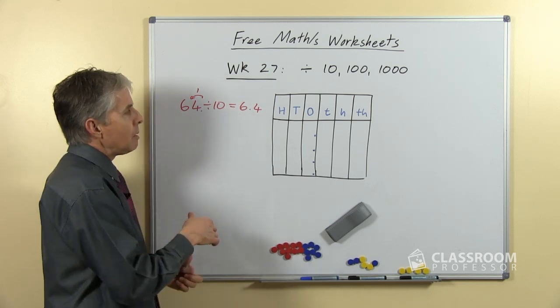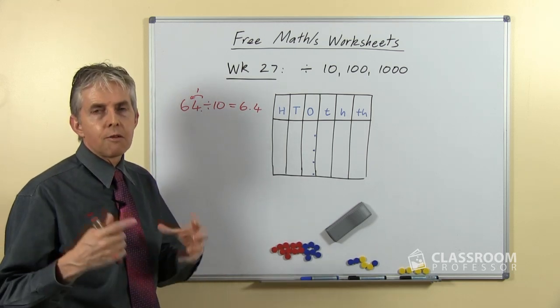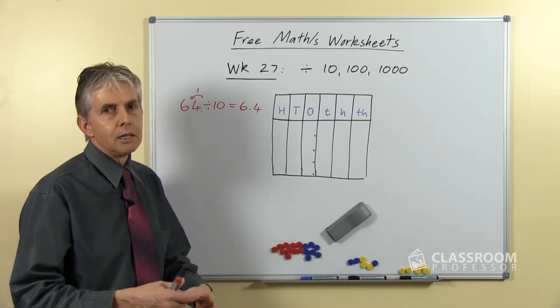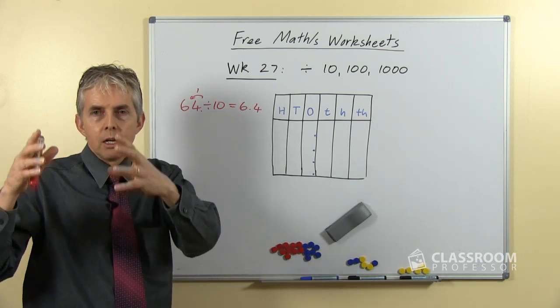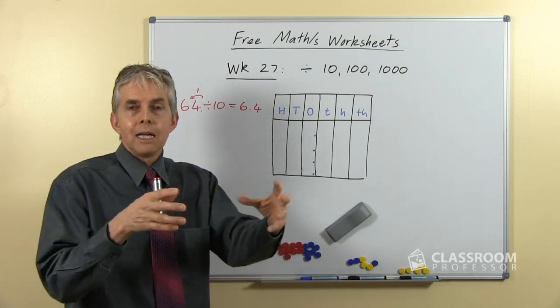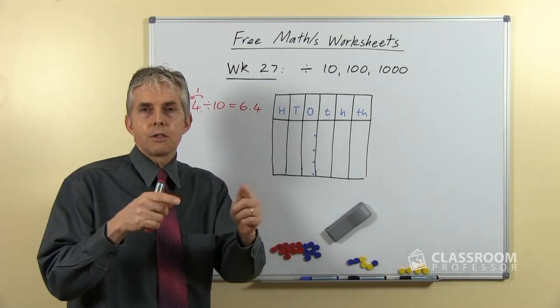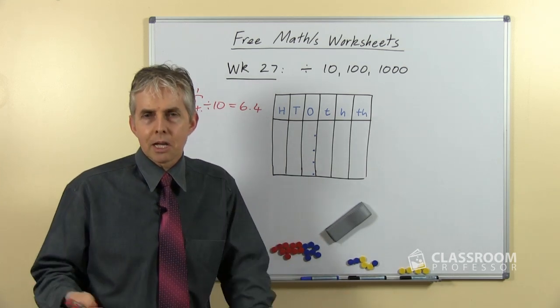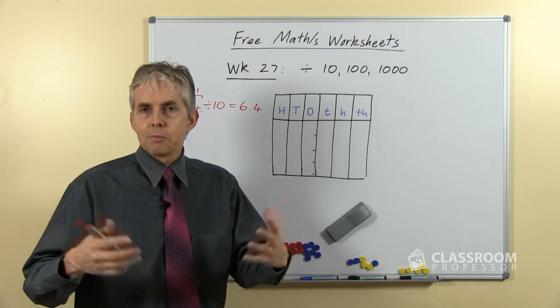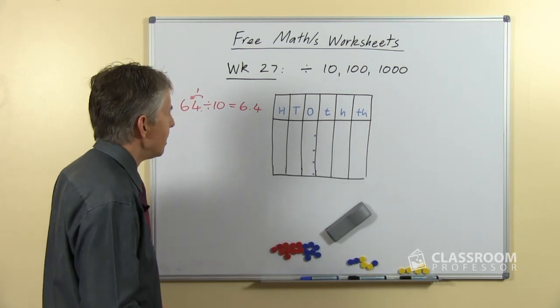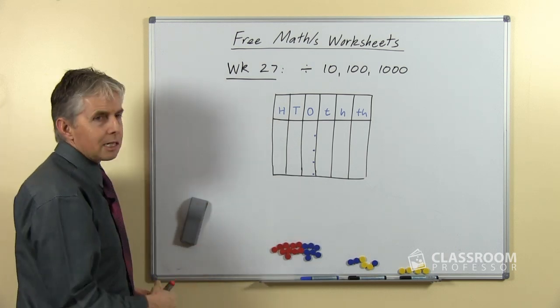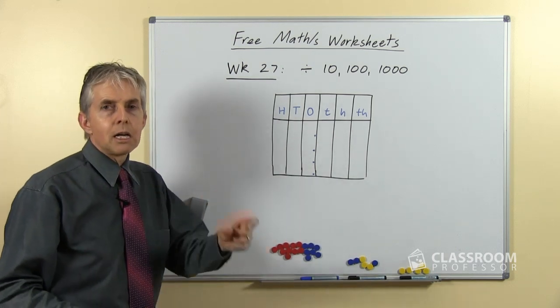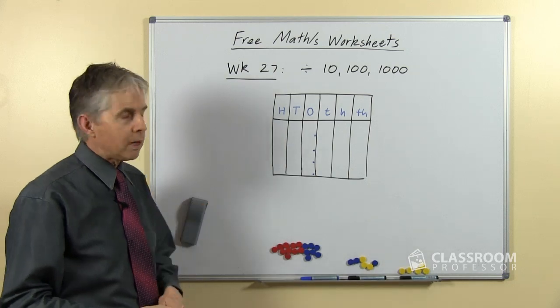So we need to impress upon our students the fact that the values are changing. If we're dividing by 10, we're getting a tenth part, so every number in every column will move into the next column because that's one tenth of the size. We can establish that with other methods, base 10 blocks and that sort of thing. So what we're going to do, rather than say let's move the decimal point, we're going to say let's move the digits into a new place.